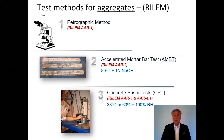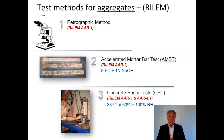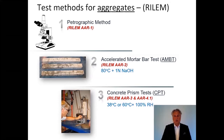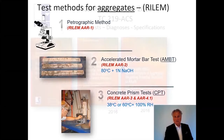The test methods developed include: the petrographic method using a microscope to look at reactive aggregates — the AAR1 method; secondly, the accelerated mortar bar test, putting mortar bars into 80 degrees and one normal sodium hydroxide solution — the AAR2 method; and thirdly, the concrete prism tests — AAR3 with exposure at 38 degrees, and AAR4-1 with exposure at 60 degrees. The concrete prisms are stored at 100% relative humidity.